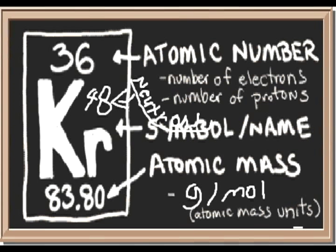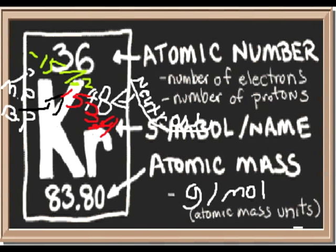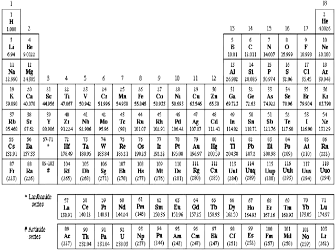And 48 neutrons. Melting point: negative 157.2 degrees Celsius. Boiling point: negative 153.4 degrees Celsius. Here's a periodic table.